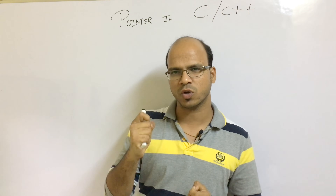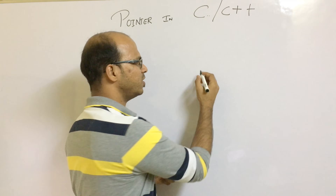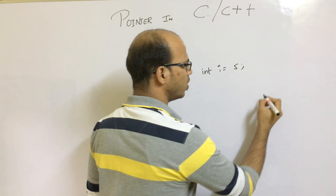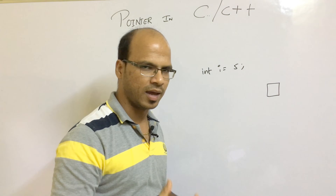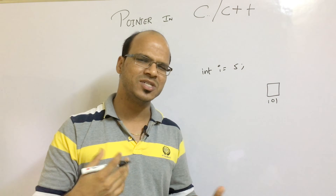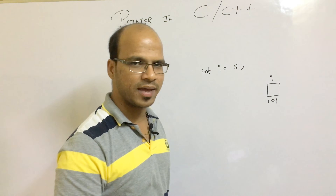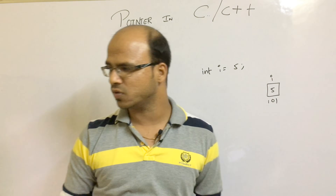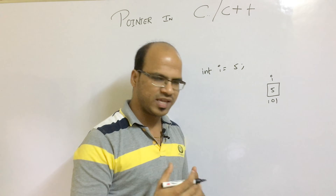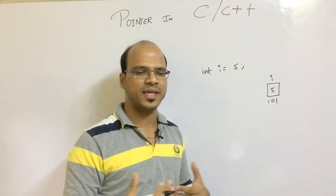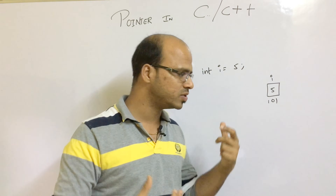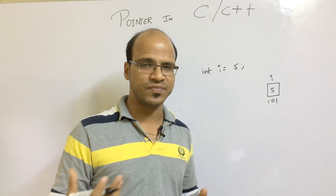When you create a variable to store some data — normally we say int i = 5 — it creates a block inside your memory with a typical address, let's say 101. The variable name is i and the value is 5. Now what if, instead of using the variable name, we could use the memory address directly? We have address 101 — can we access it without using the variable name? The answer is yes, and that's when we use pointers.